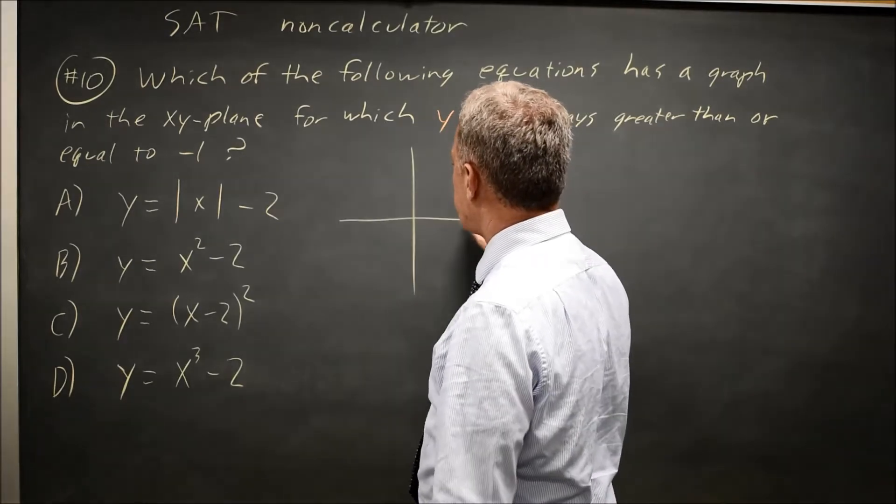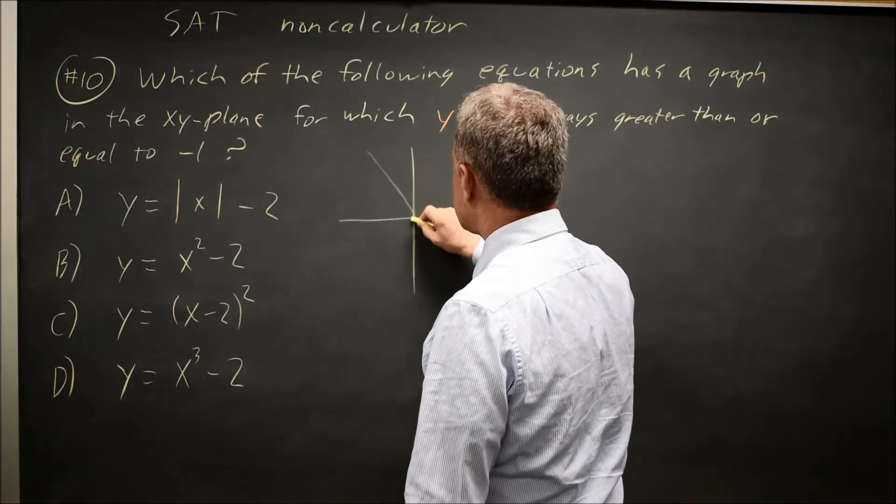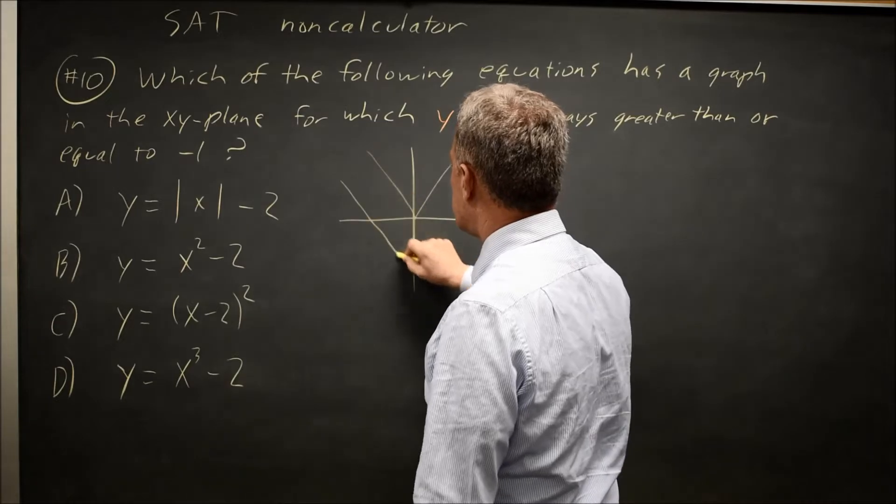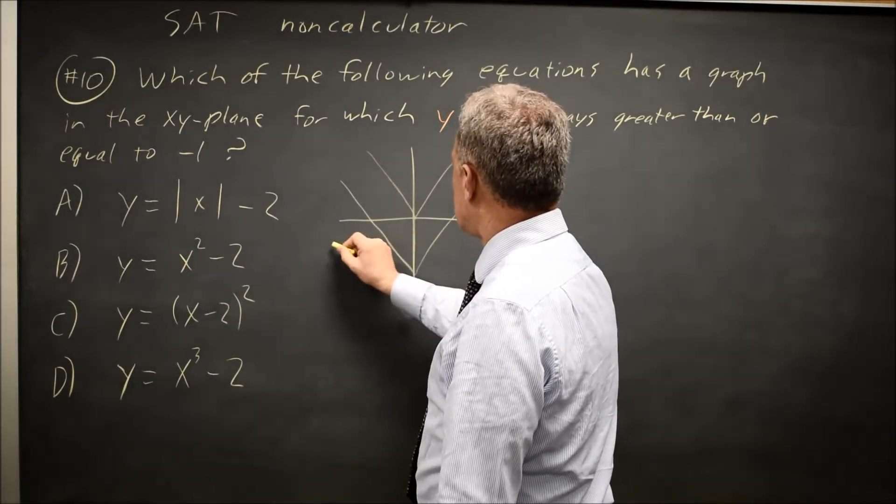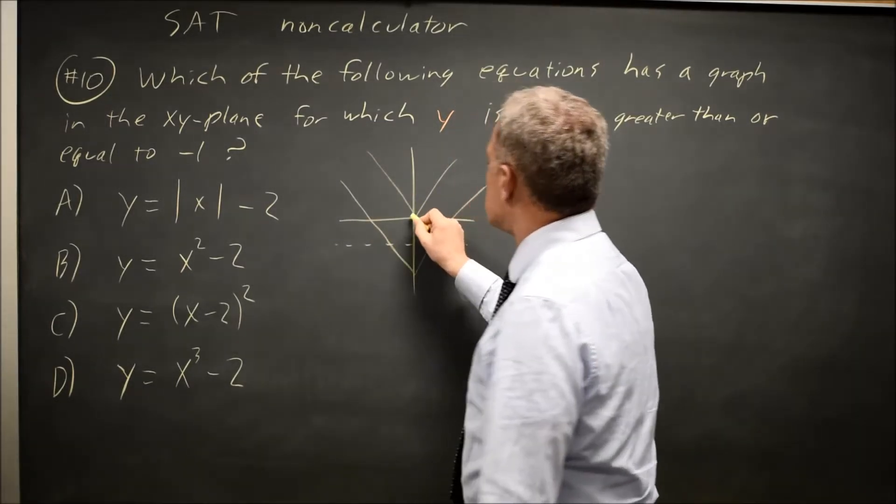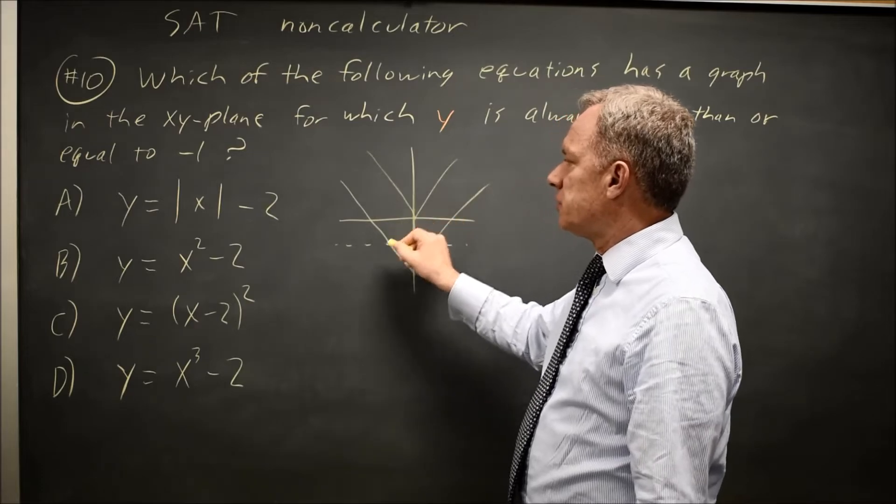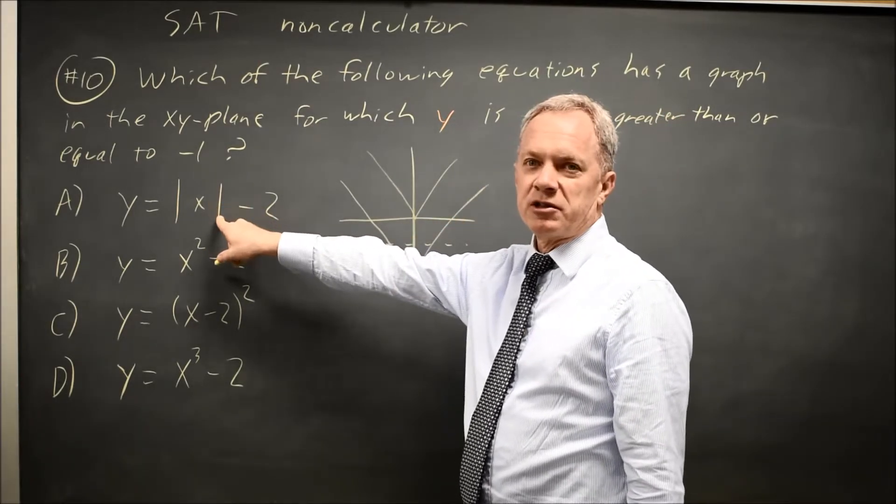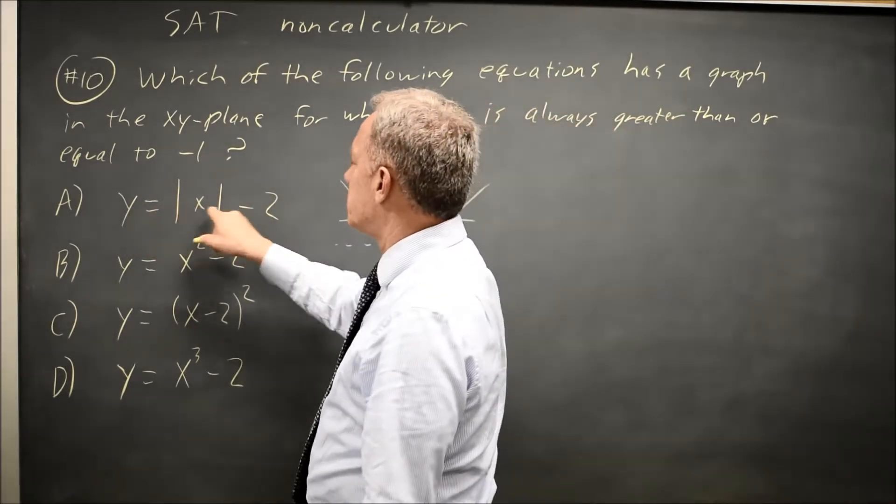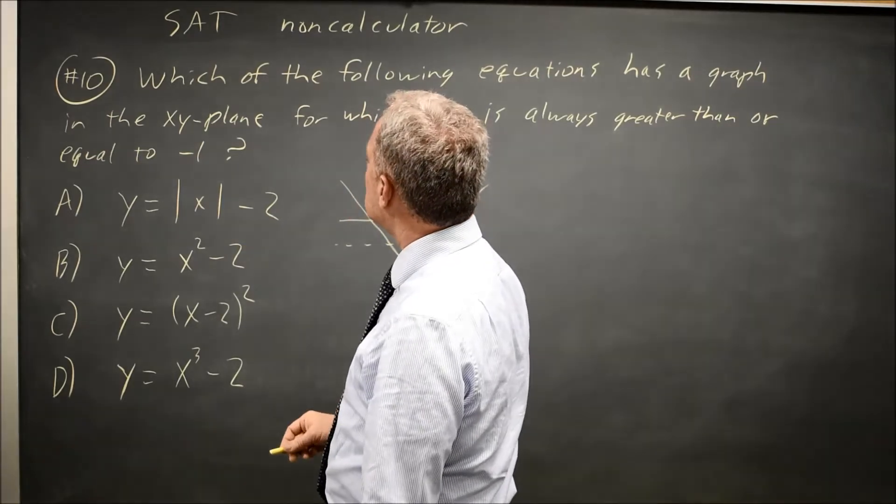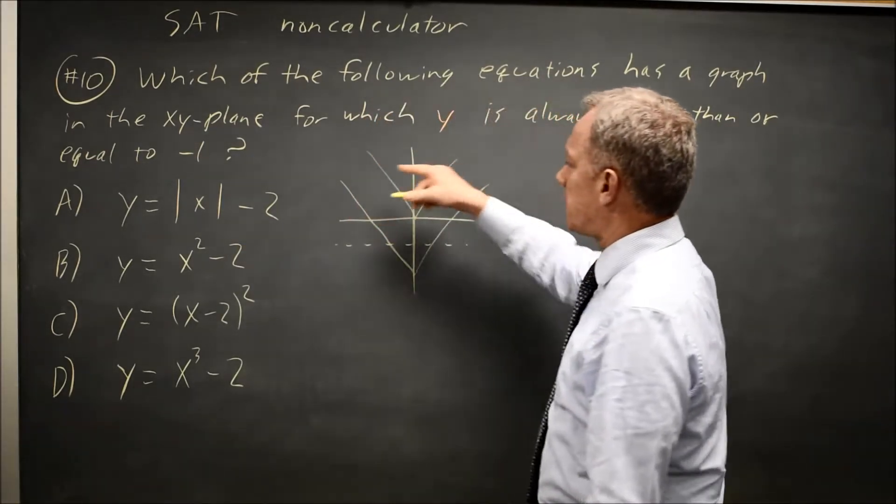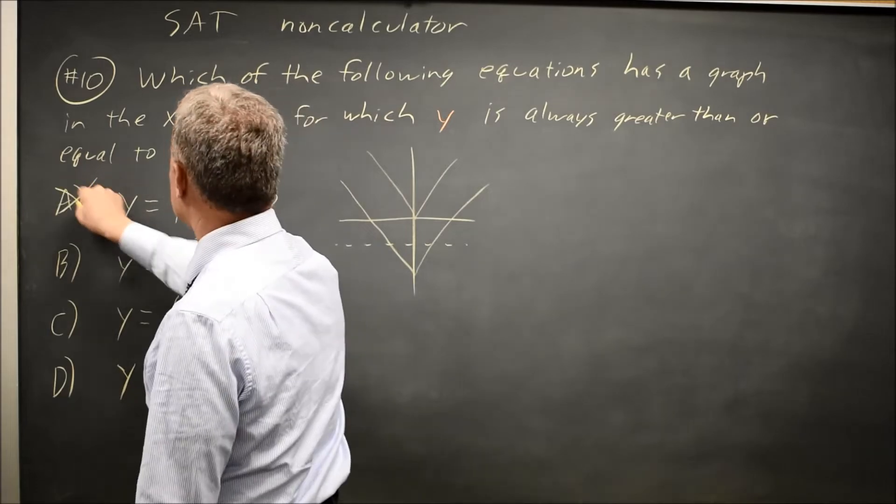So choice A is an absolute value, which would normally look like this, shifted down by 2. Since absolute value of 0 is 0, y of 0 is 0 minus 2 is negative 2, which is less than negative 1, so choice A does not work.